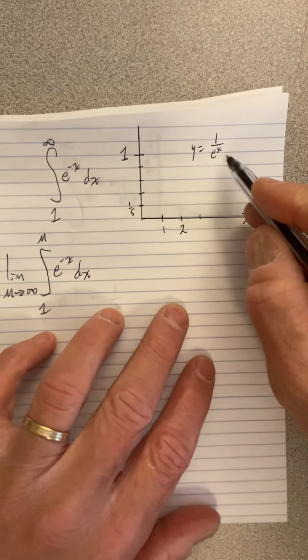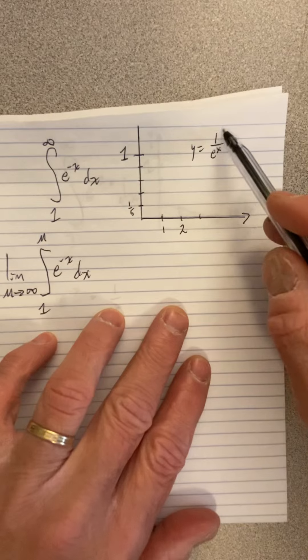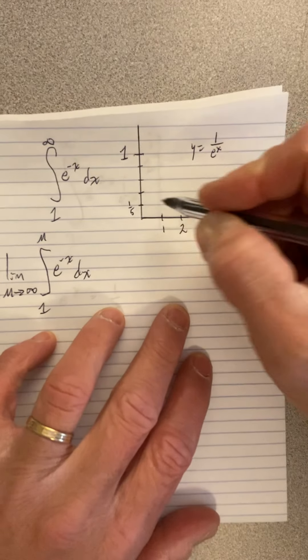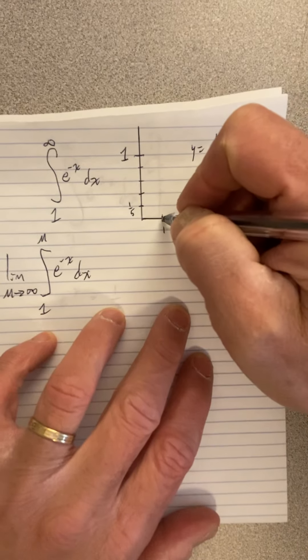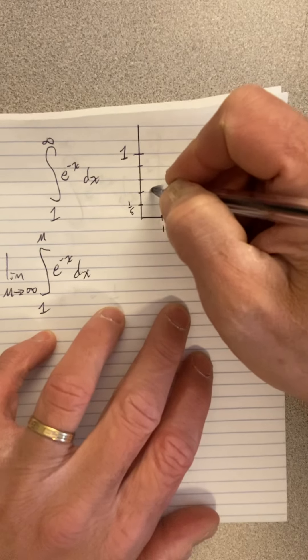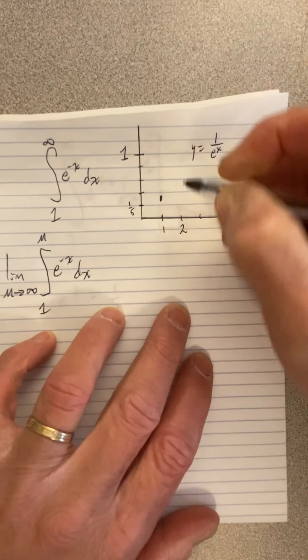Let's graph it. If I put in 1, e to the negative x, same thing as 1 over e to the x. If I put in 1 into this function, I get 1 over e. That's about 0.35. So this is 0.2, 0.4, so about right there.